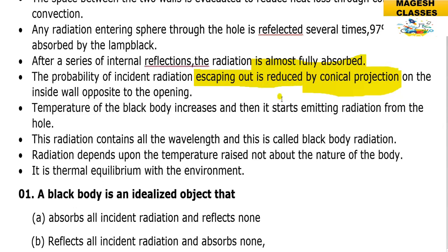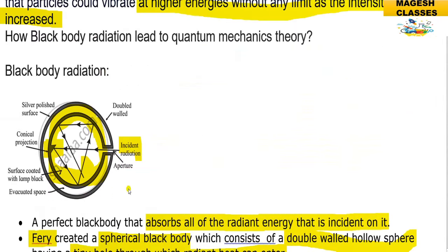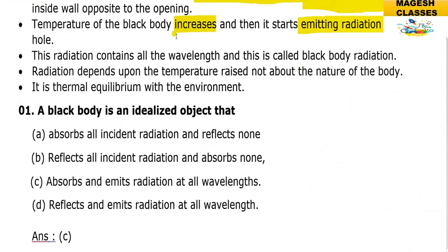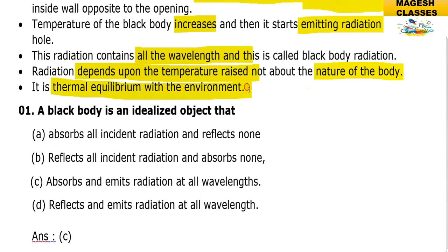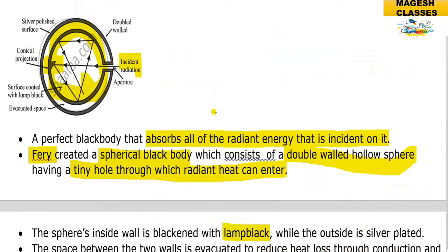As the temperature of the black body increases, it starts emitting radiation from the hole. The emitting radiation contains all wavelengths and this is called black body radiation. The radiation depends upon the temperature — not the nature of the body — and the body is in thermal equilibrium with the environment.